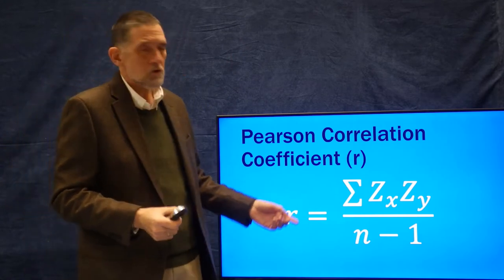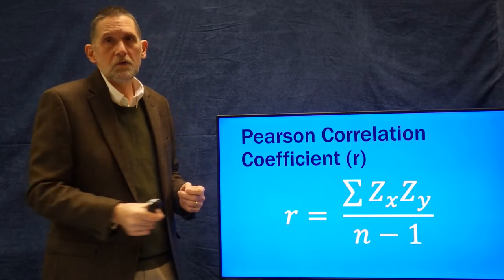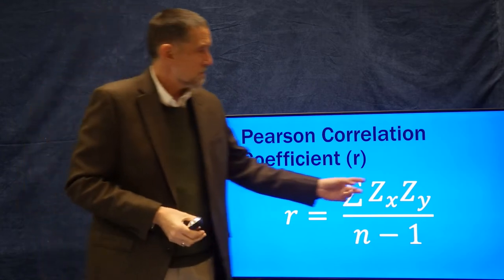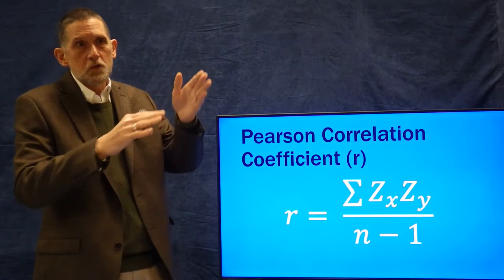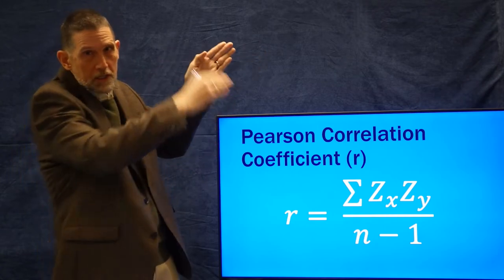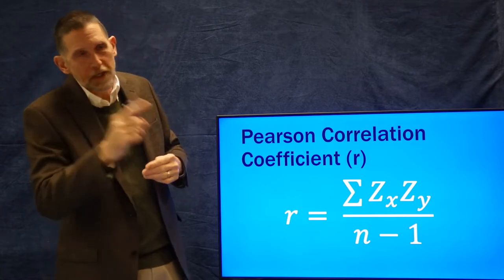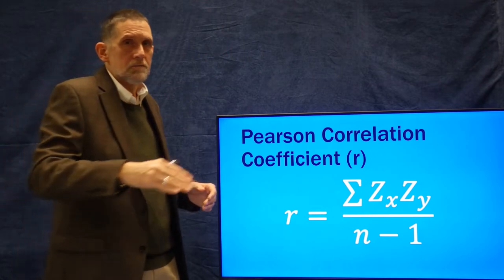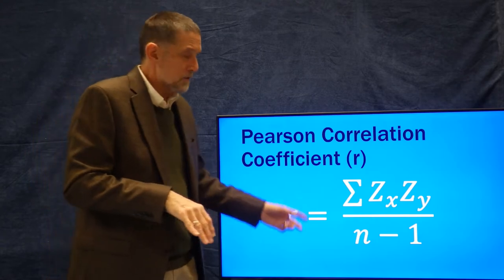If as one variable goes up the other goes down, we get a negative number — for instance, positive two times negative two gives negative four — so a negative correlation yields a negative r. A positive correlation yields a positive r. The correlation coefficient can only vary between minus one and one.